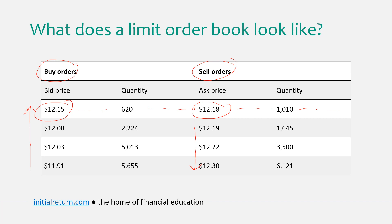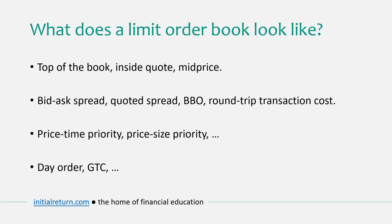The bid-ask spread is a measure of liquidity. To understand that, imagine you want to buy a share and immediately sell it back — you will incur a cost, and that's the bid-ask spread. For example, in this order book you would buy one share at 12.18 (the lowest ask) and immediately sell it back at 12.15, implying a loss of three cents. That's called a round-trip transaction cost. There's also a concept called mid price, which is simply the average of the highest bid and lowest ask — in this case 12.165.